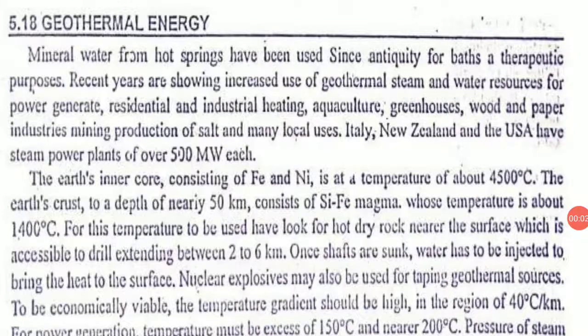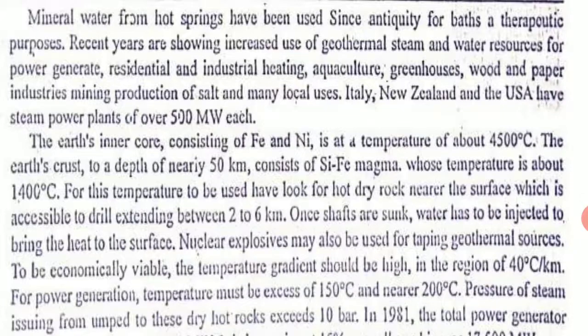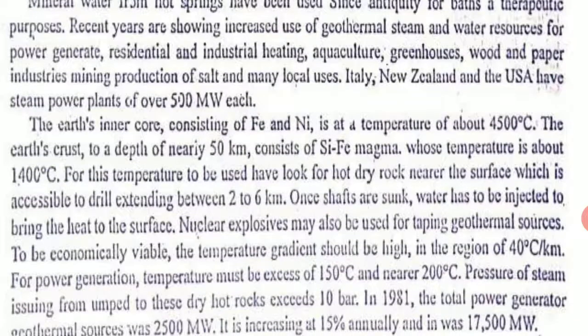Hello students, now we shall look at geothermal energy. Basically, you know that the earth's core inside is hot, with temperatures of around 4500 degrees Celsius in the inner core of the earth's crust. It contains silicon, iron, magma, and hot lava. The temperature at around 50 kilometers down is around 1400 degrees Centigrade.